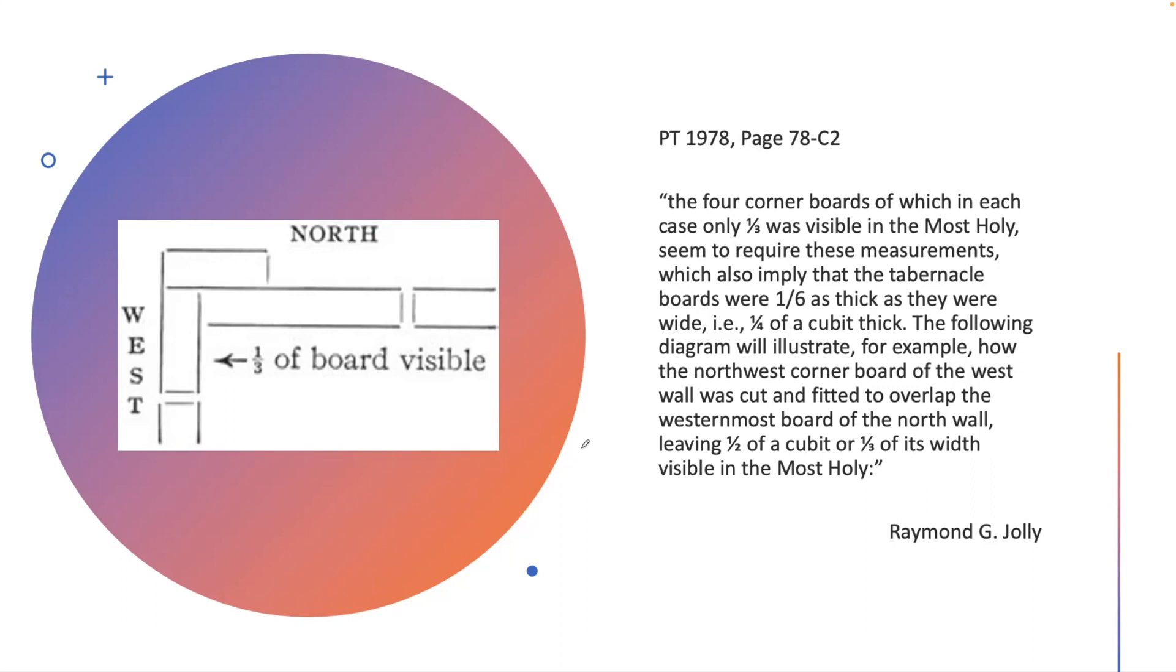The following diagram will illustrate, for example, how the northwest corner board of the west wall was cut and fitted to overlap the westernmost board of the north wall.